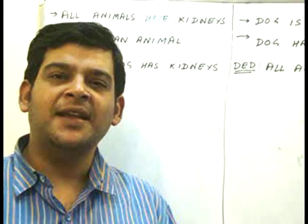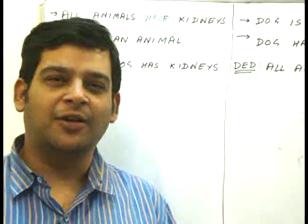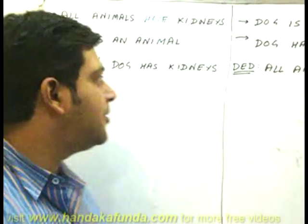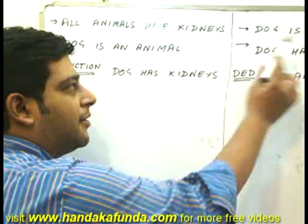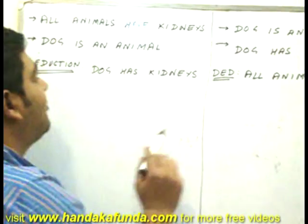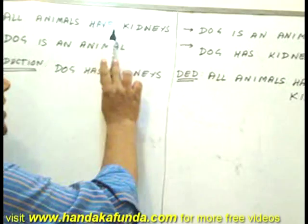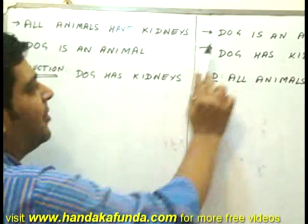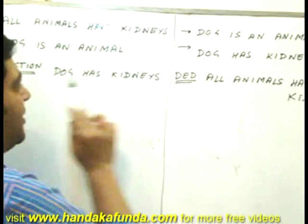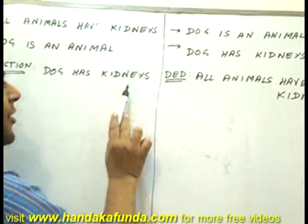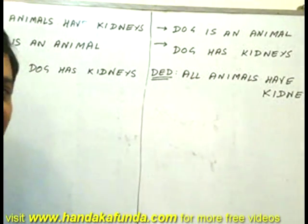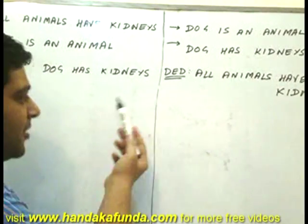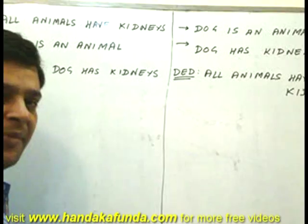In syllogisms, it is very important to look at the order of statements. As you can see here, the three statements are the same in both questions: all animals have kidneys, dog is an animal, and dog has kidneys. But let's see how the difference comes in the two arrangements.